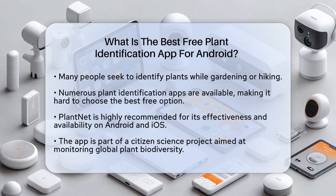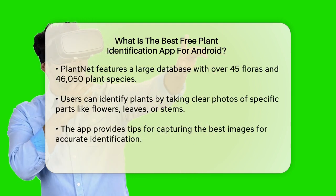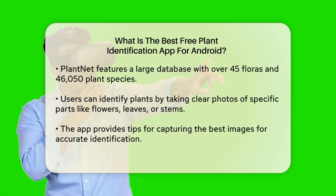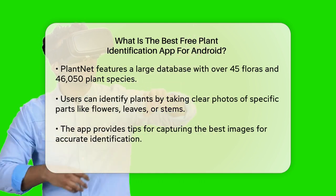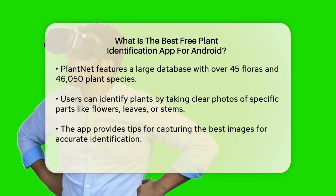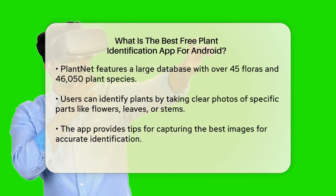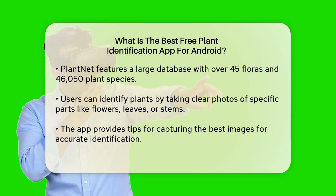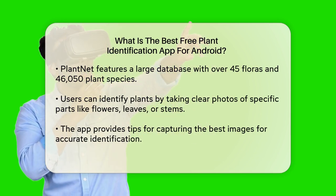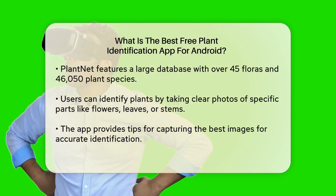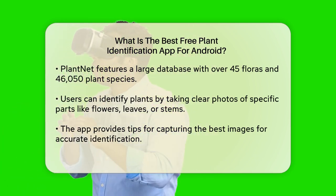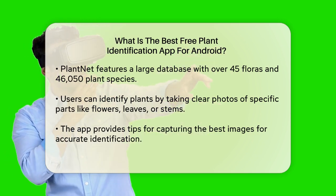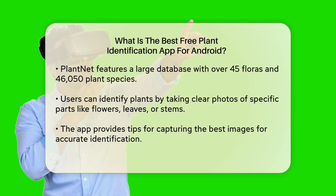It boasts a massive database with over 45 floras and 46,150 plant species. To use PlantNet, you simply take a clear photo of the plant, focusing on one part, like a flower, leaf, or stem. Make sure the background is natural or neutral and the image is sharp and centered. The app provides tips on how to take the best photos for accurate identification.